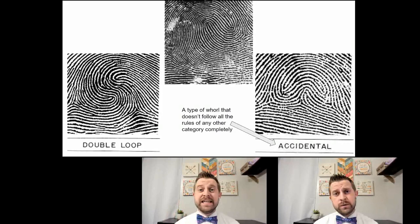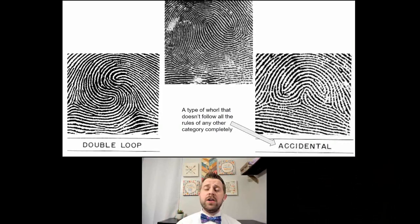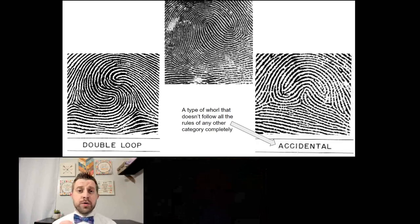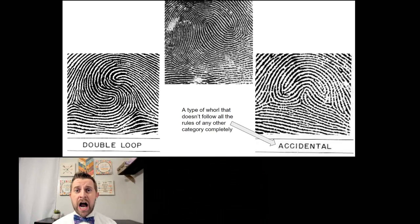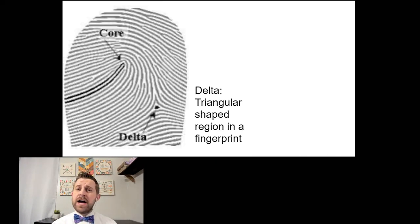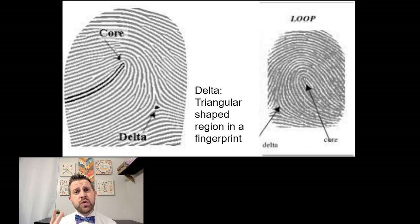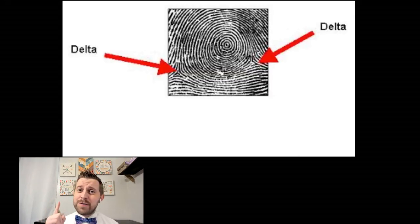That just means it doesn't follow rules. Other prints are described by their number of deltas. Loops have one, but I'll tell ya which type always contains two. Yes it's a whirl.